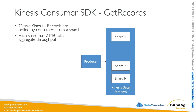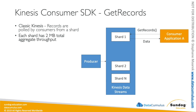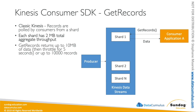Here's an example: our producer is writing to a Kinesis Data Stream with, say, three shards, giving us six megabytes of aggregate consumer throughput, with each shard providing two megabytes for its own consumers. A consumer application calls GetRecords on a shard, which returns data. To get more data, it must call GetRecords again — that's the polling mechanism. Each GetRecords call returns up to 10 megabytes of data or up to 1,000 records. Since 10 megabytes exceeds the two megabytes per second limit, you must wait five seconds before the next call.